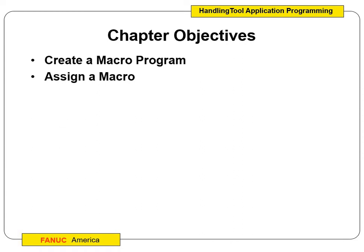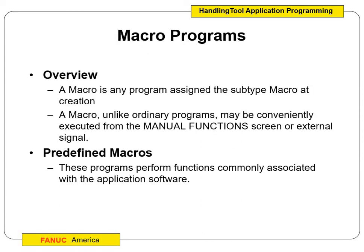We're going to create a macro program and then assign a macro. The cool thing about a macro is it's a program that's just assigned the subtype macro at creation. There's nothing special to making a macro — it's just like a normal program we've already created. We can use one of your existing programs as a macro; we just have to go back into the detail and change a couple things at the subtype level.